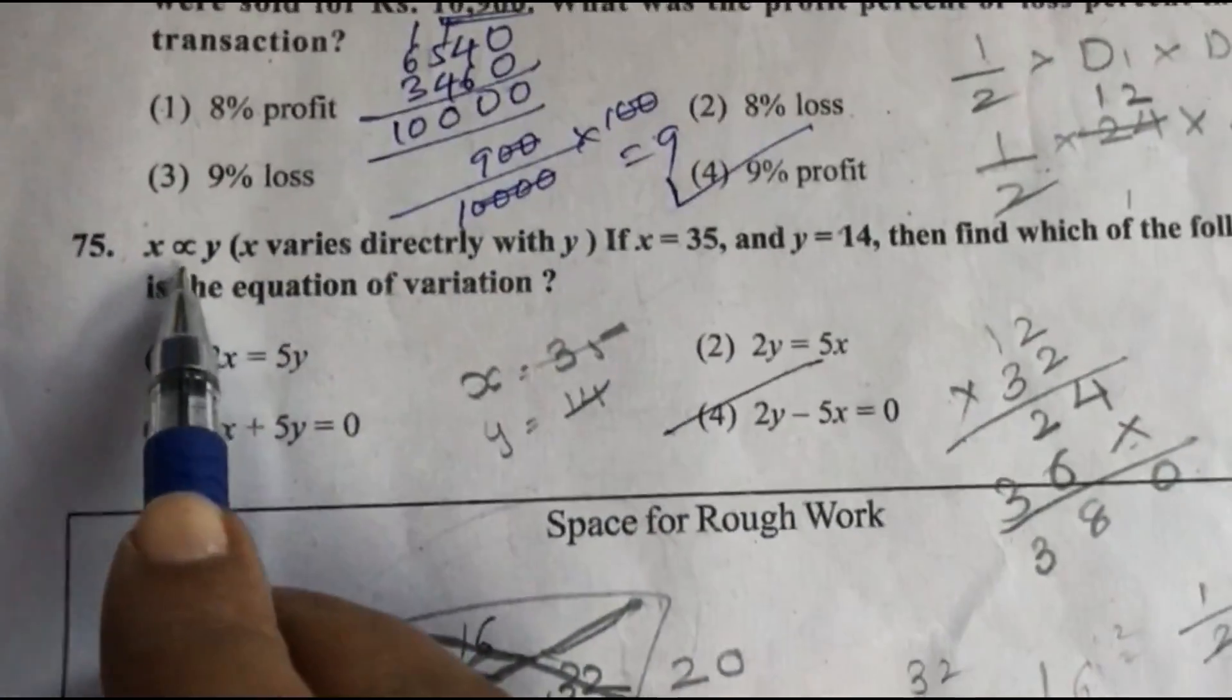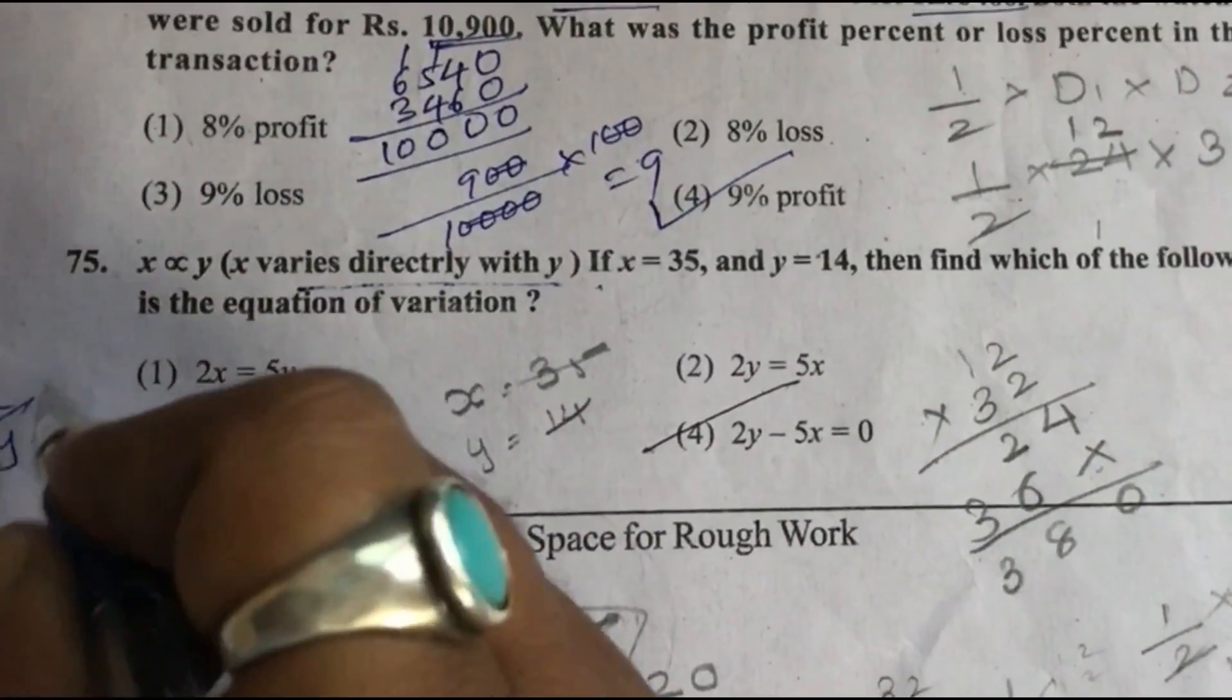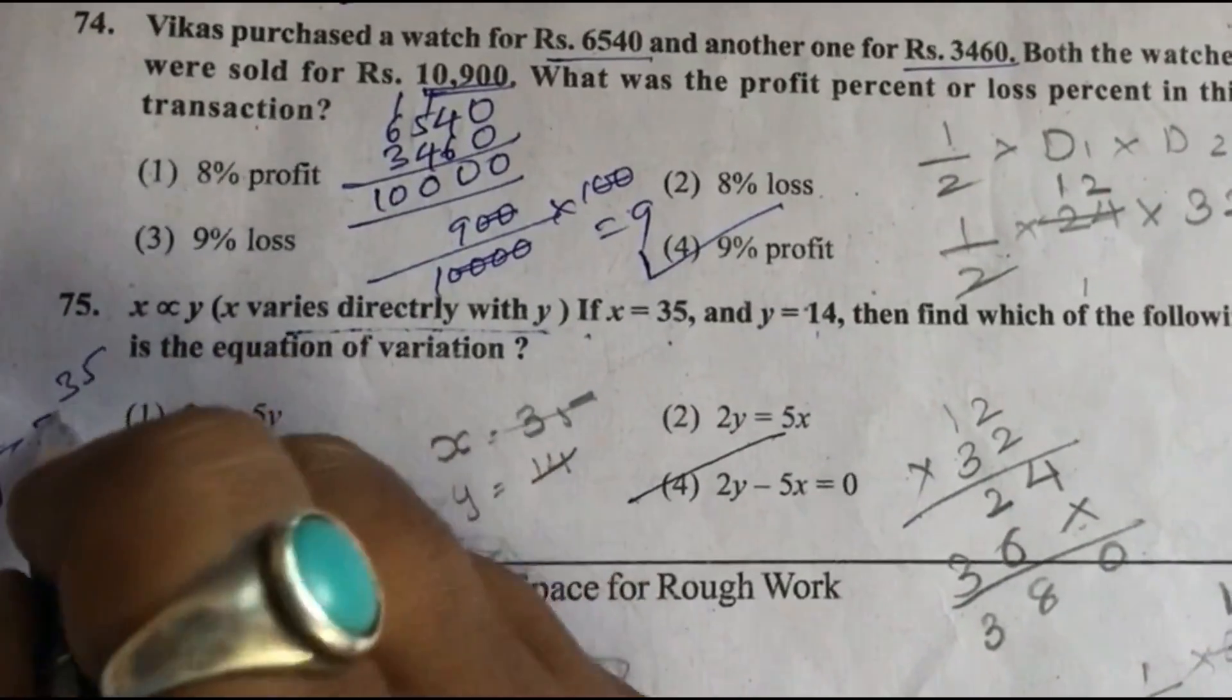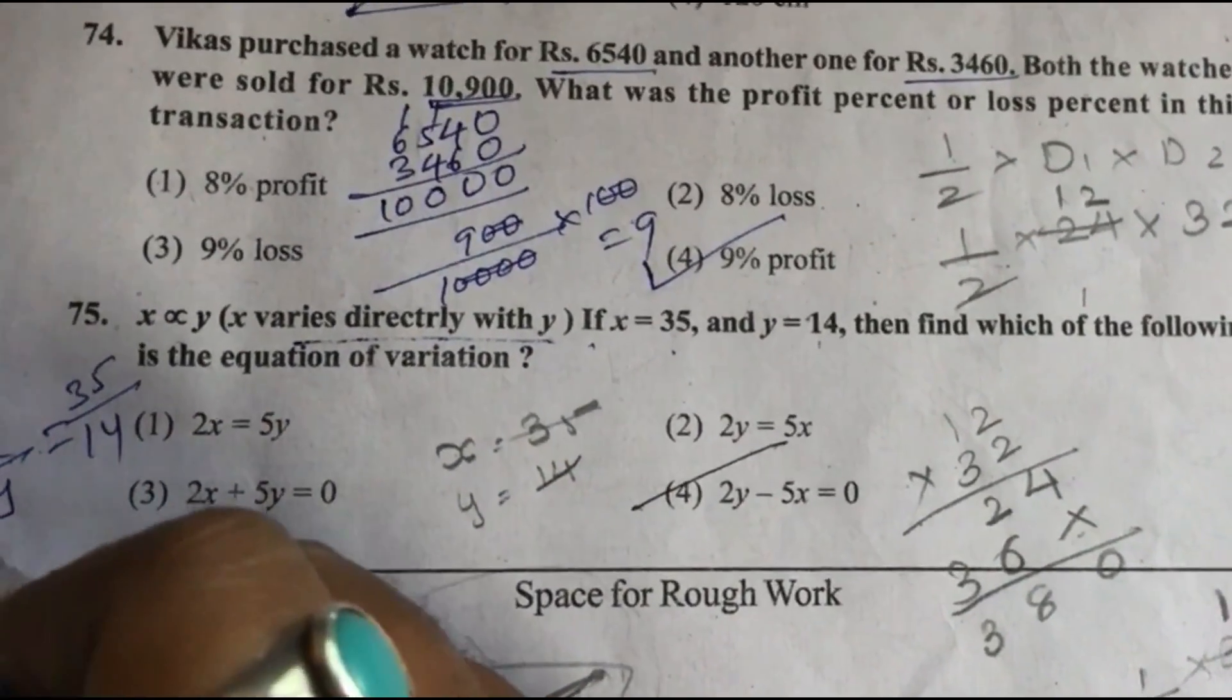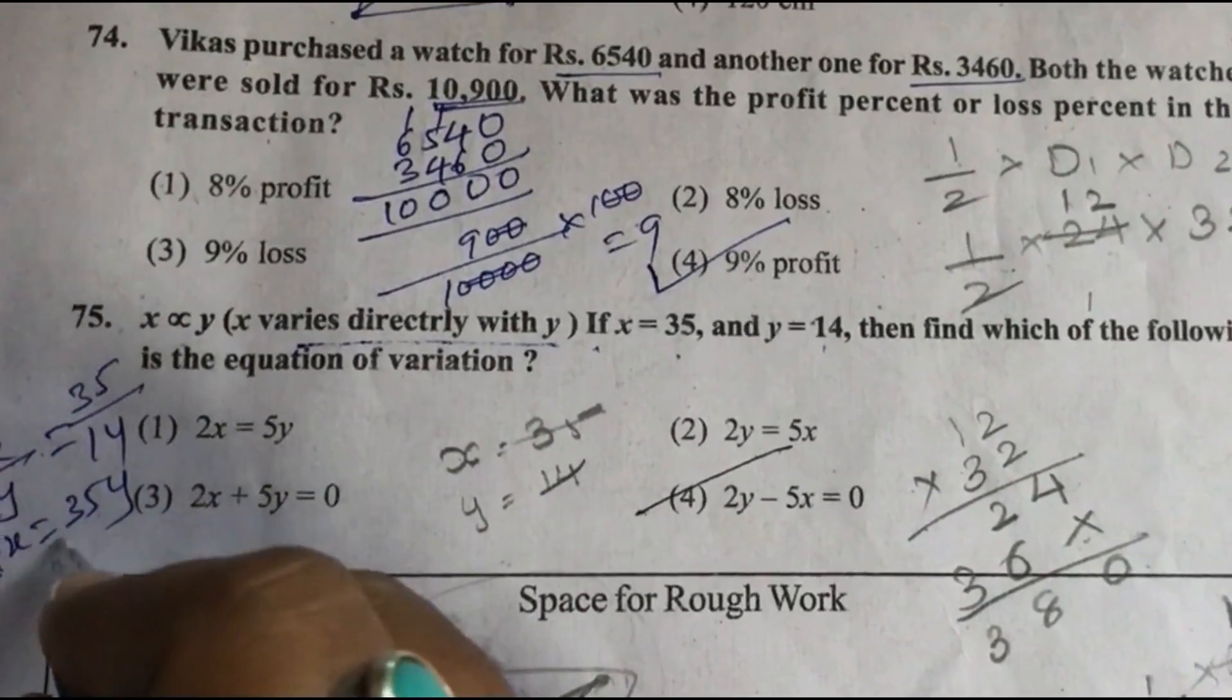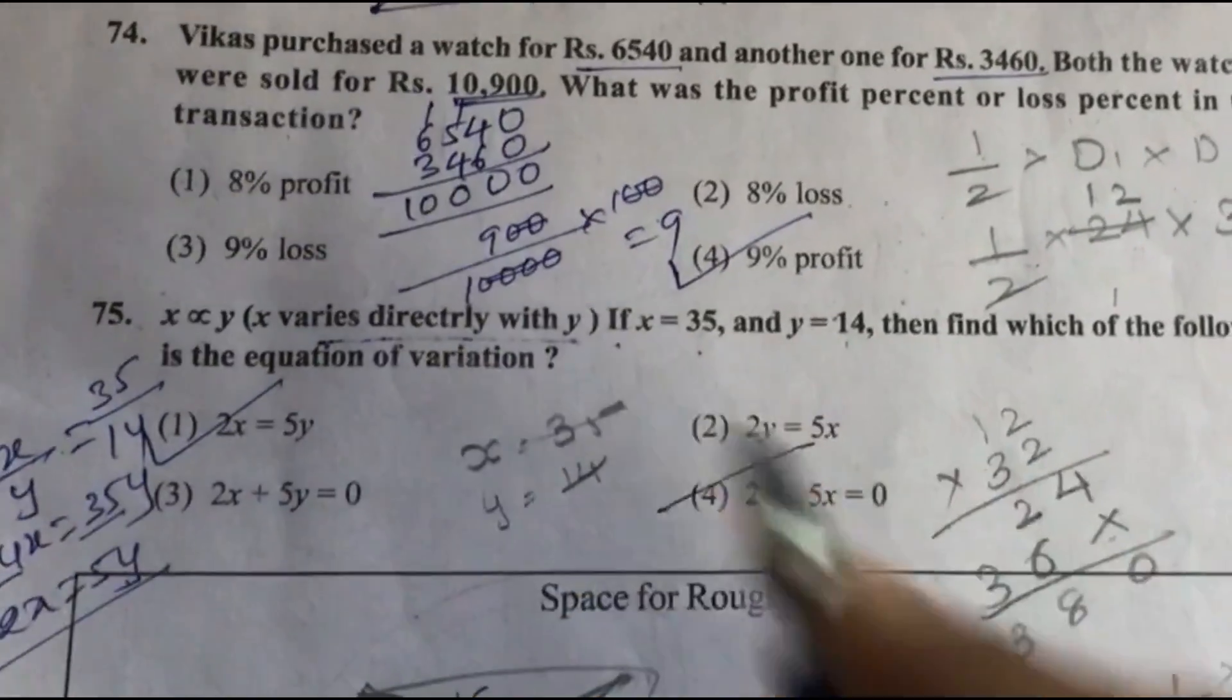Question 75: x varies directly with y. That means division is constant, so x upon y is constant. x equals 35, y equals 14. By cross multiplication, 2x equals 5y, option 1 is the answer.